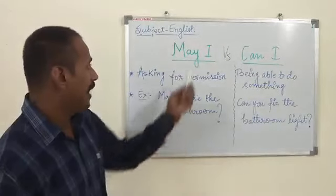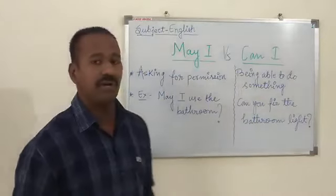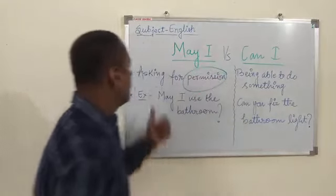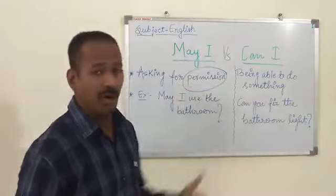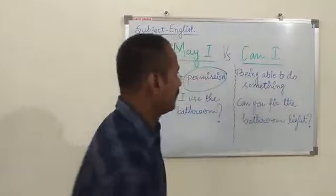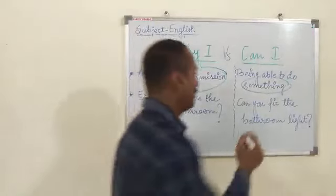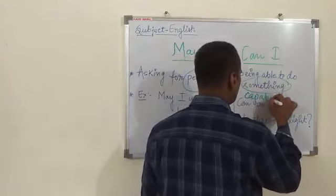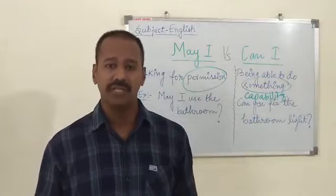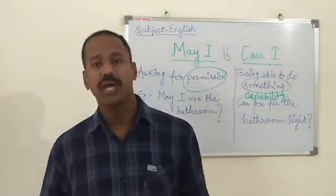First, 'may' is generally used for permission — asking for permission. On the other hand, 'can' is used for being able to do something — it shows your capability. Sadly, all are not permitted to do everything, and at the same time, everyone is not capable of doing everything.